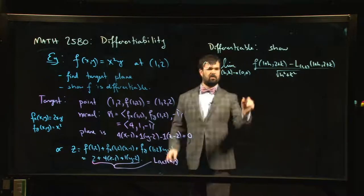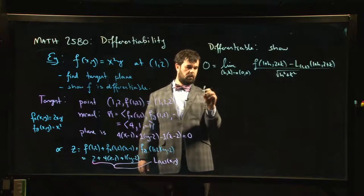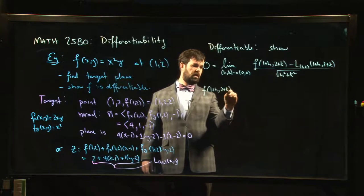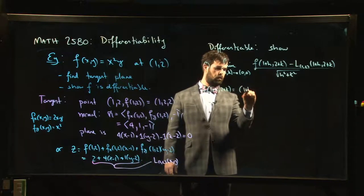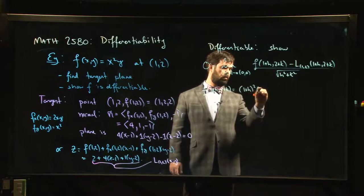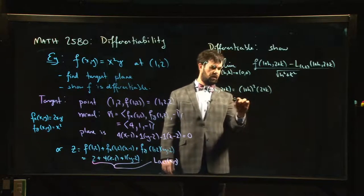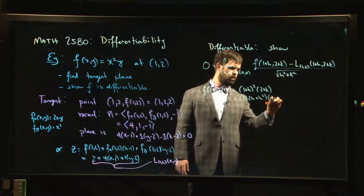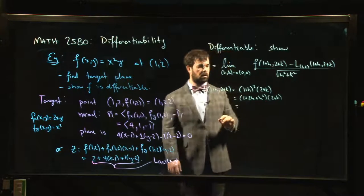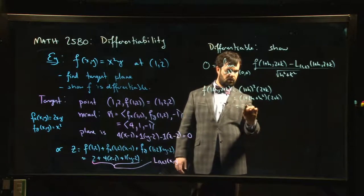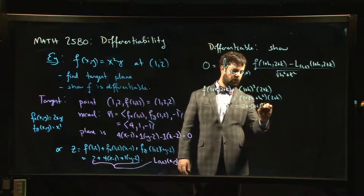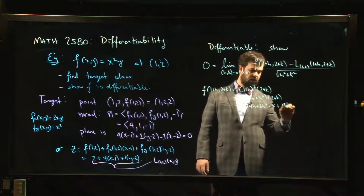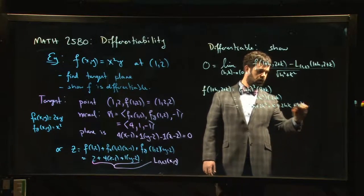So let's start with the numerator. Let's see what we can say. Okay, so f(1+h, 2+k) is (1+h) squared times (2+k), right? So 1, 2h, h squared, 2 plus k, so this is going to give me 2 plus 4h plus 2h squared plus k plus 2hk plus h squared k. Okay, alright.